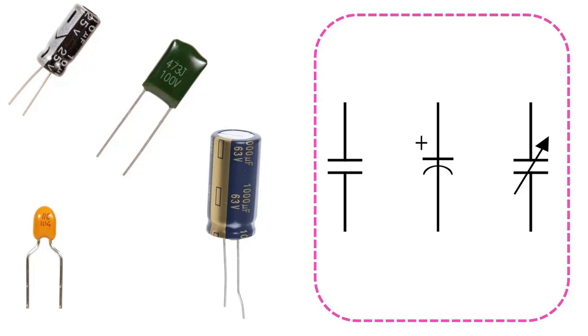The left symbol is used for non-polar capacitor used in AC circuits, while the middle symbol is used for polarized capacitors used in DC circuits. The one on the right is the symbol used for regulated capacitors.